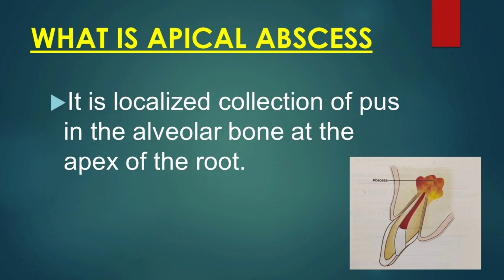So what is apical abscess? It is a localized collection of pus in the alveolar bone at the apex of the root, following the death of the pulp with the extension of the infection through the apical foramen into periradicular tissue.